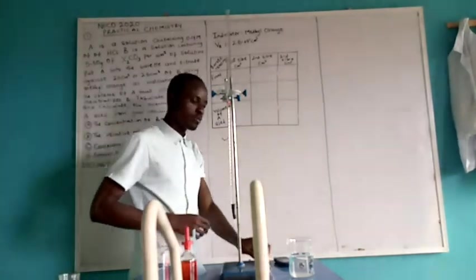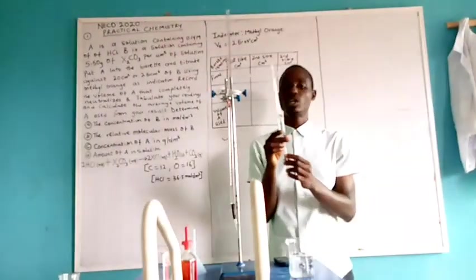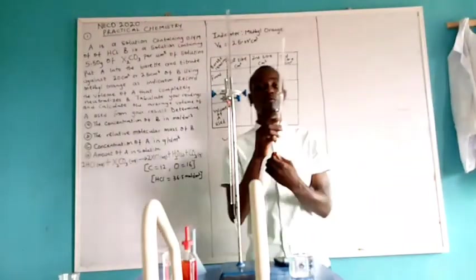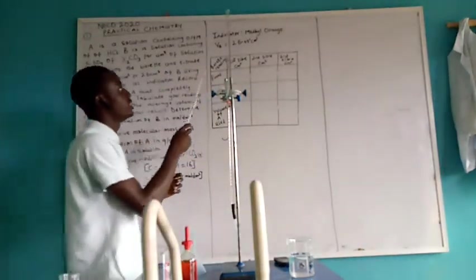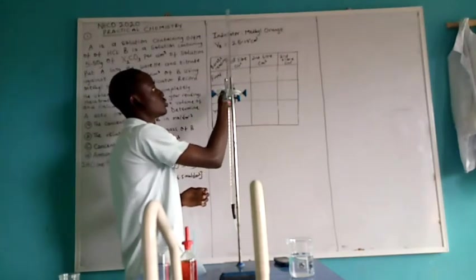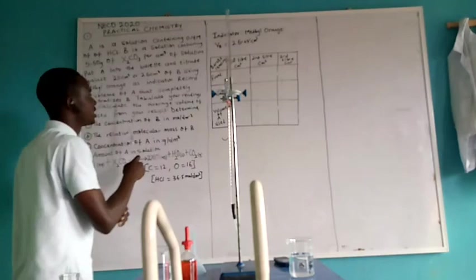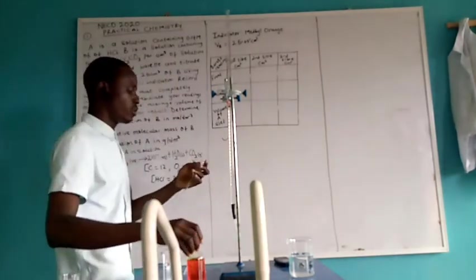Put A into the burette and titrate against 20 or 25 cm³ of B. The volume of pipette used corresponds to the volume of base used. Here we have 25 cm³ of the base, so we are using 25. The volume of the base must be recorded on top of the table.